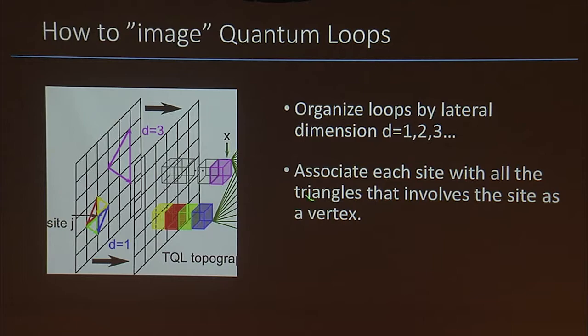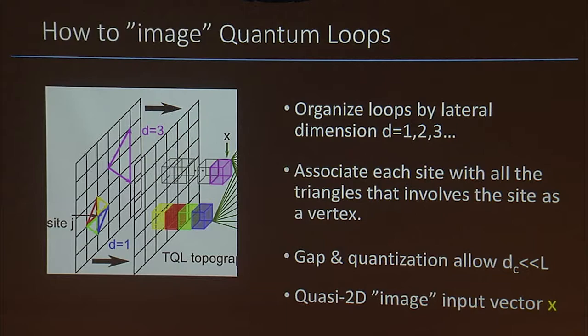And we are able to get the phase diagram in about 10 minutes or so on a laptop, with a high degree of accuracy. Moreover, if we zoom in, we see sort of singularity, which is telling us that there is something really qualitatively changing there. So we organized these loops by the dimension and associated site with all the triangles. And using that as an input, we were quite successful. And that was the end of this first paper. And then we started to wonder, but how did it work so well? Why did it work so well? What I didn't tell you was what was the network architecture we used?